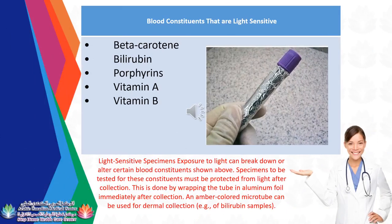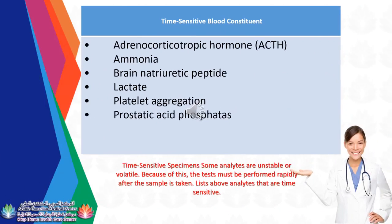Blood constituents that are light-sensitive include: Beta-carotene, Bilirubin, Porphyrins, Vitamin A, and Vitamin B. Exposure to light can break down or alter these blood constituents. Specimens tested for these constituents must be protected from light after collection by wrapping the tube in aluminum foil immediately after collection. An amber-colored micro tube can be used for dermal collection of bilirubin samples. Time-sensitive blood constituents include: ACTH, Ammonia, Brain natriuretic peptide, Lactate, Platelet aggregation, and Prostatic acid phosphatase. These analytes are unstable or volatile, and tests must be performed rapidly after the sample is taken.